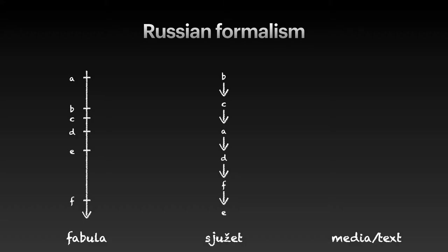The difference between fabula and schusset should be clear now. In schusset, we have the narrated events as they are presented to the audience. In fabula, we have the events as they would have occurred in the real world. As a home exercise, you can take a film and try to map its events, first as schusset and then as fabula. You could try to do this with Quentin Tarantino's Pulp Fiction or Christopher Nolan's Memento. The third layer corresponds to the surface of the story as it is expressed in language signs, as a text or via some other media such as a film.